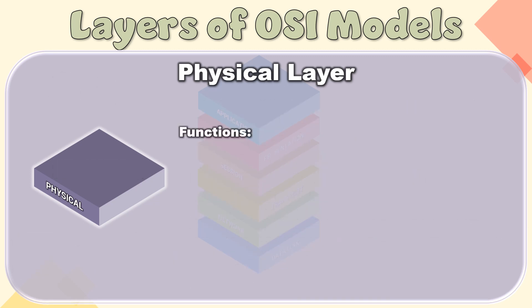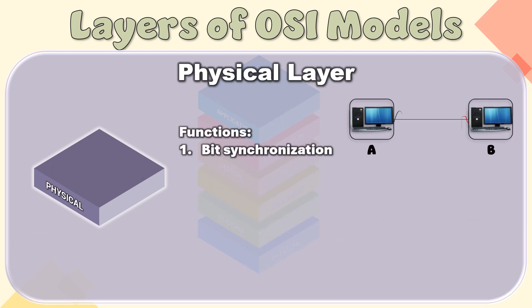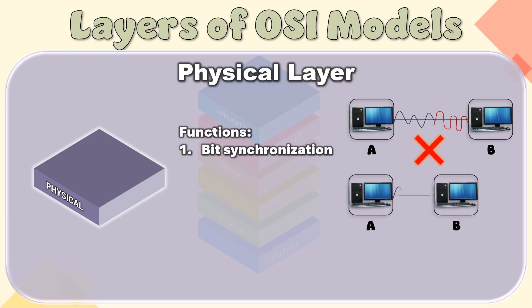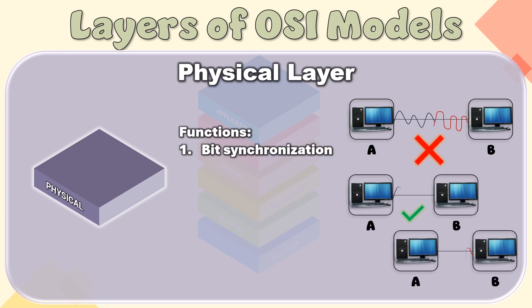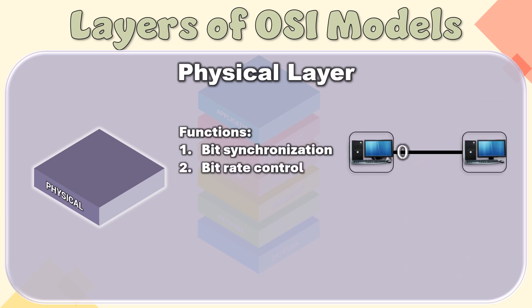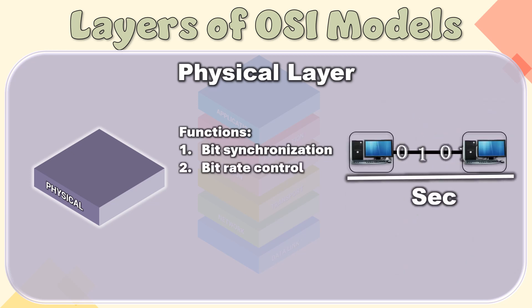Functions of the Physical Layer. Bit Synchronization: The physical layer provides the synchronization of the bits by providing a clock. This clock controls both sender and receiver, thus providing synchronization at the bit level. Bit Rate Control: The physical layer also defines the transmission rate, i.e., the number of bits sent per second.